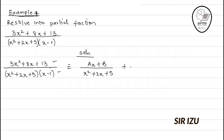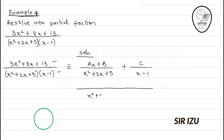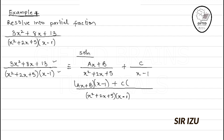We join these two terms by finding the LCM, which is (x² + 2x + 5)(x − 1). This gives us (Ax + B)(x − 1) plus C(x² + 2x + 5) on the right-hand side. We write the left-hand side as well and then eliminate the common denominators.